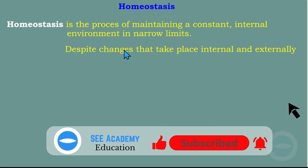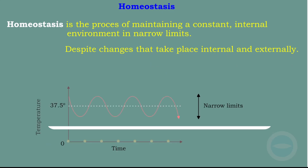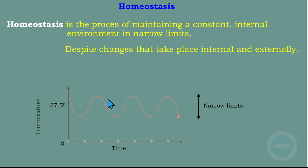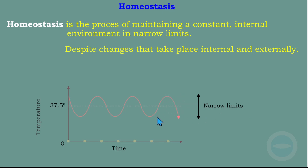Here I have a graph. These graphs show the body temperature. Our body temperature ranges around 37.5 degrees Celsius. If the temperature goes down, then it goes back again — it goes down and goes back again. This is what we call homeostasis; it takes place within a narrow limit, meaning the changes from maximum to minimum are very small. It doesn't matter if the changes take place internally or externally. To achieve homeostasis, there is a mechanism called the negative feedback mechanism.